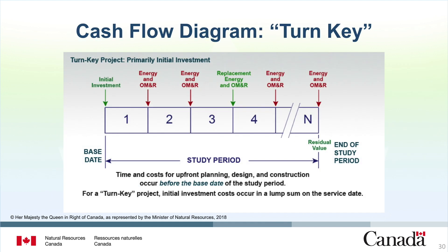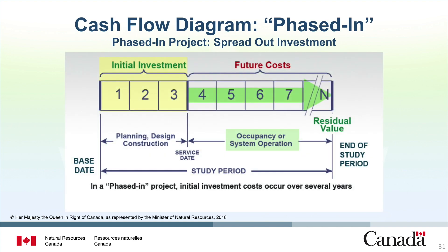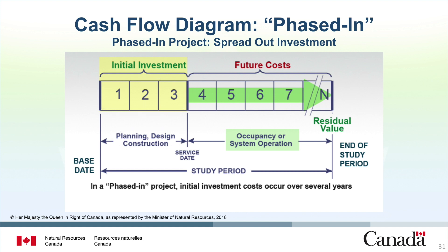For a turnkey project, time and costs for upfront planning, design, and construction occur before the base date of the study period. Initial investment costs occur in a lump sum on the base date when the building is occupied or the system is taken into operation, and energy costs and other operational costs begin to accrue. Energy and OM&R costs occur periodically until the end of the study period in year N. In contrast, in a phased-in project, the initial investment costs occur over several years. The cash flow diagram reflects this — initial investments are made in years 1 to 3 and system operation begins in year 4.